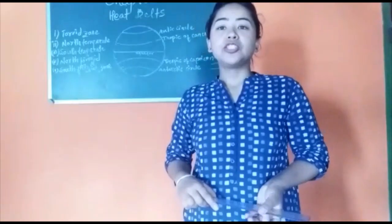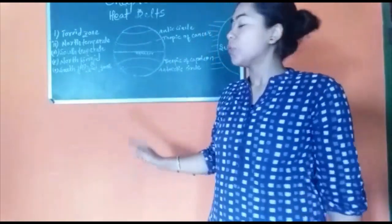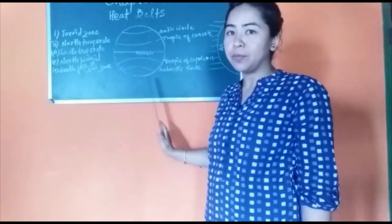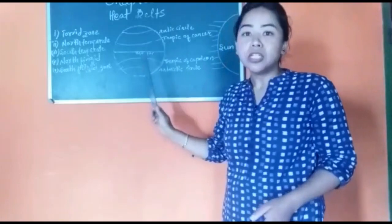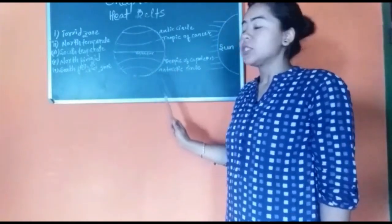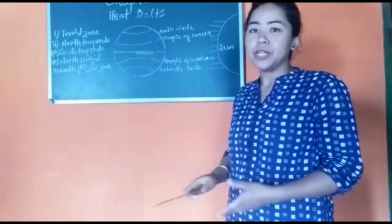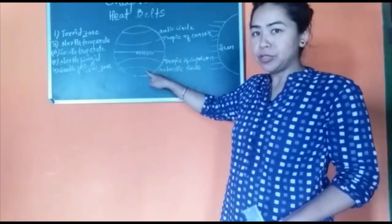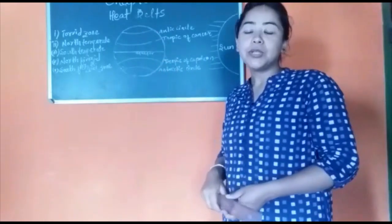As we all know, the shape of the earth is a sphere — it is not flat. Due to the curvature or the round shape of the earth, the amount of heat that the earth receives from the sun is not equally distributed. Some parts of the earth are very hot whereas some parts are very cold. For example, the poles are the coldest part of the earth because they receive oblique or slanting rays of the sun.